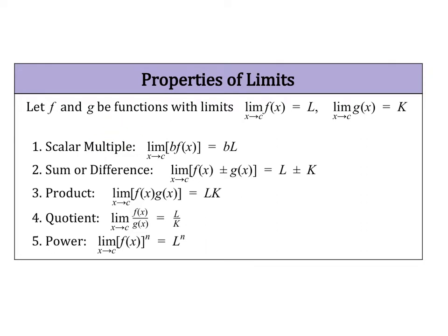The first property: if you have a function with a scalar multiple — essentially something with a GCF — you can factor out that scalar multiple, find the limit of the remaining function L, and then multiply the limit by your scalar. If you have a sum or difference within your function, you can treat each term as a different function, find those limits individually, and then add or subtract the limits. The same process applies for a product or a quotient — find ways to split your entire function into different parts.